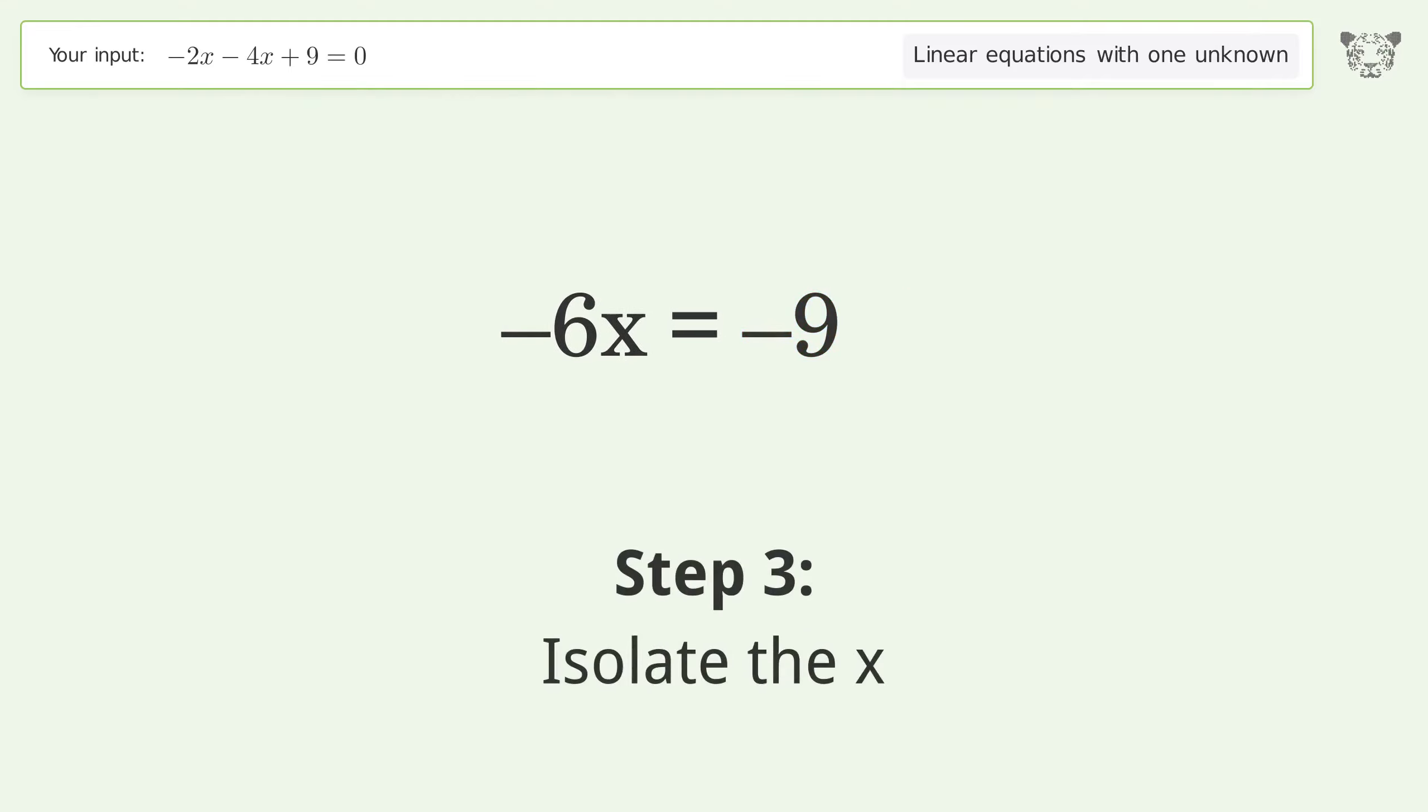Isolate the x. Divide both sides by negative 6. Cancel out the negatives.